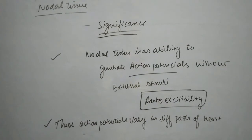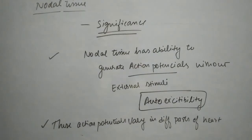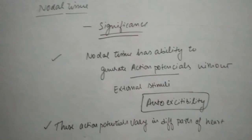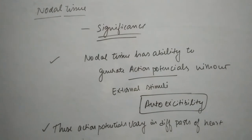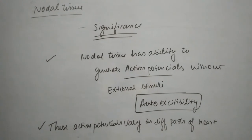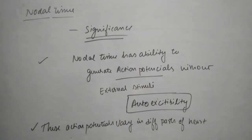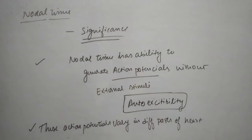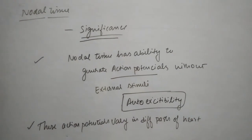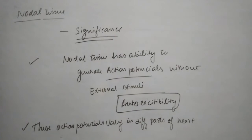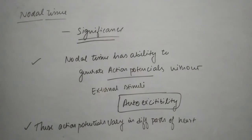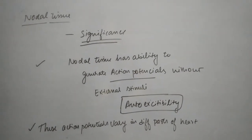The significance of this nodal tissue is to generate action potentials without external stimuli. That's why the heart is called an auto-excitable organ, and this property is auto-excitability. These action potentials vary in different parts of the heart.